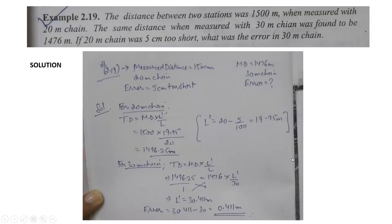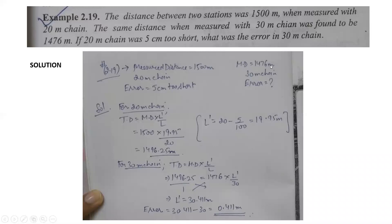Next question. The distance between two stations was 1500 meters when measured with a 20-meter chain. The same distance when measured with a 30-meter chain gave 1476 meters. If the 20-meter chain was 5 cm too short, what error was there in the 30-meter chain? That is the question.